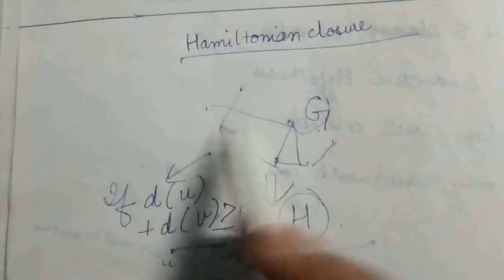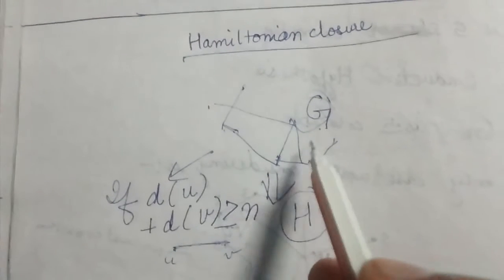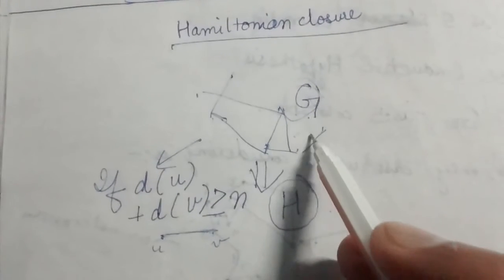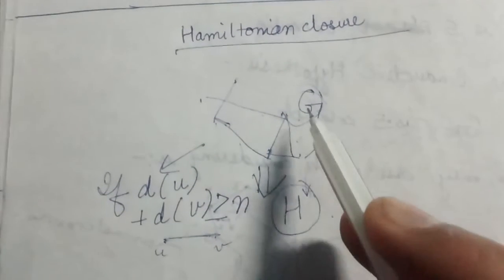And so on we continue till we can add more edges to this graph. So proceeding in this way we obtain the Hamiltonian closure H for this graph.